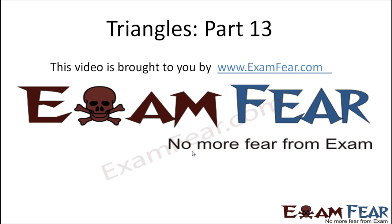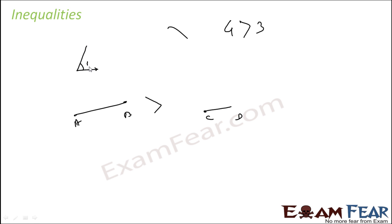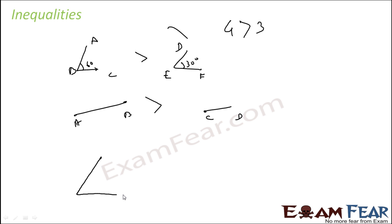This video on triangles part 13 is brought to you by examfia.com. Let's talk about inequalities. Things need not be equal — for example, 4 is greater than 3. This is an inequality sign. Similarly, for two line segments, the length of line segment AB can be greater than line segment C. We can also compare two angles: angle ABC is greater than angle DEF. Similarly, we can have the inequality concept in the case of triangles.